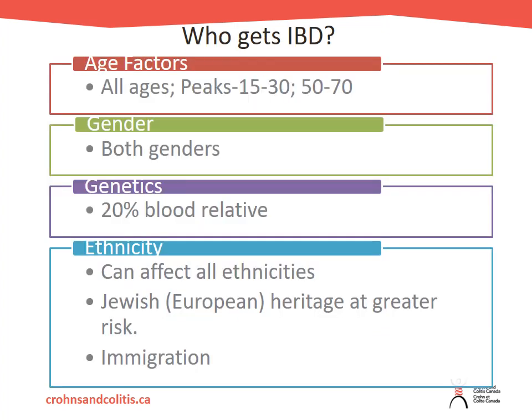Who gets IBD? It affects all age groups, with two peak periods: between ages 15 and 30, and again between ages 50 and 70. It affects both genders equally; however, more women are likely to be diagnosed with Crohn's disease than men. There is also a relationship with family history — if you have a blood relative with IBD, you are 20% more likely to develop the disease yourself.